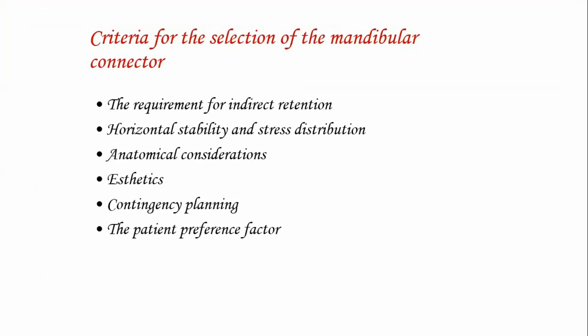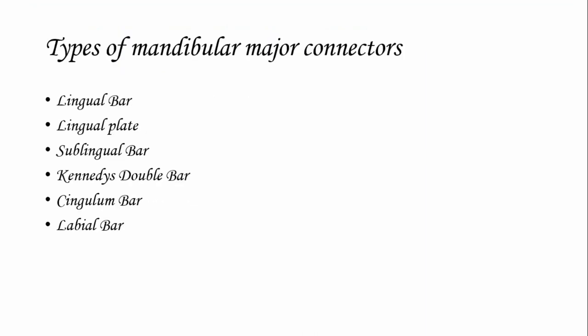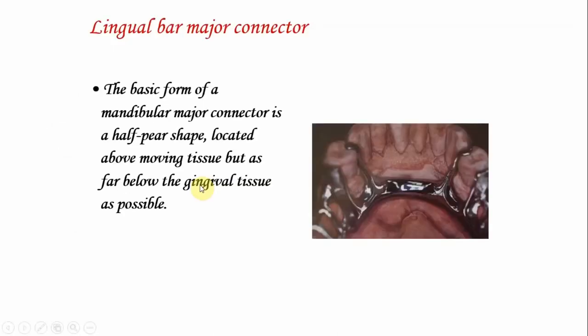There are basically six types of mandibular major connectors: lingual bar, lingual plate, sublingual bar, Kennedy's double bar, single bar, and labial bar. Out of these, the lingual bar and lingual plate are most commonly used.